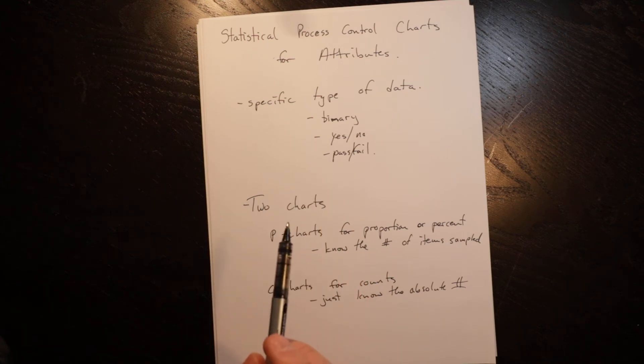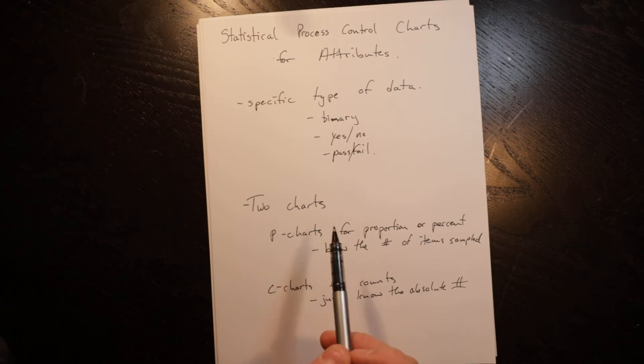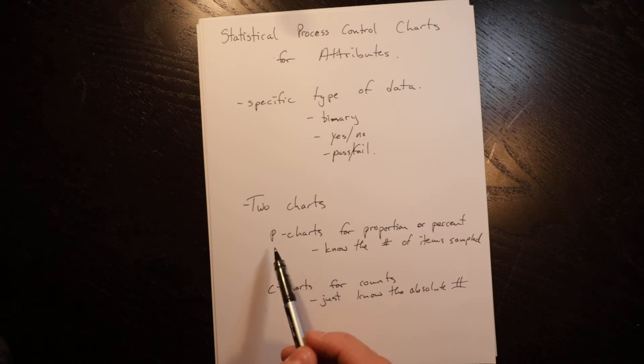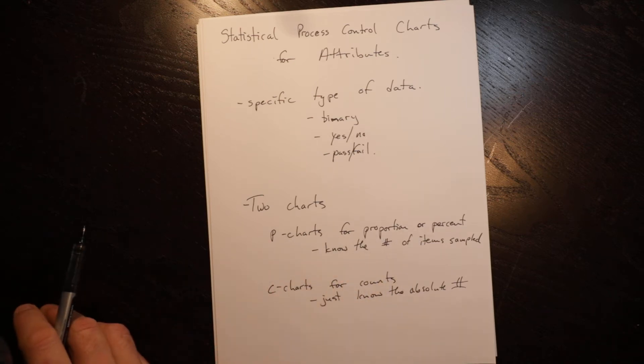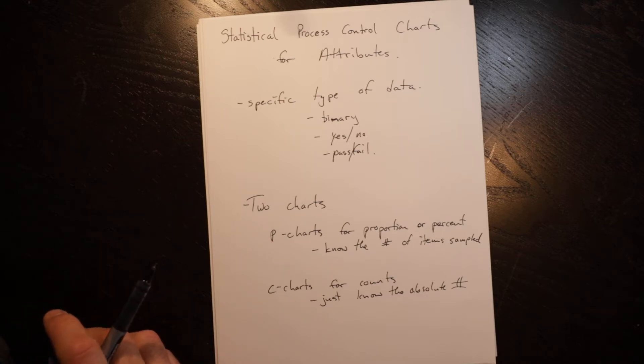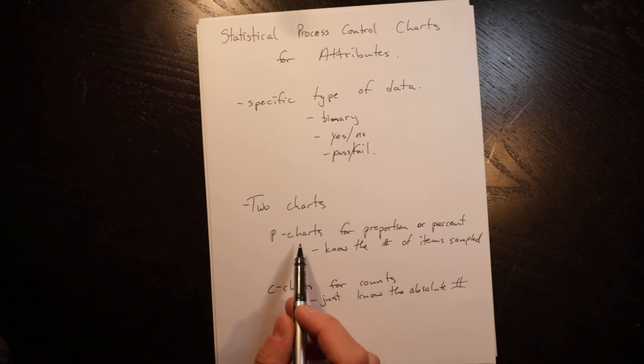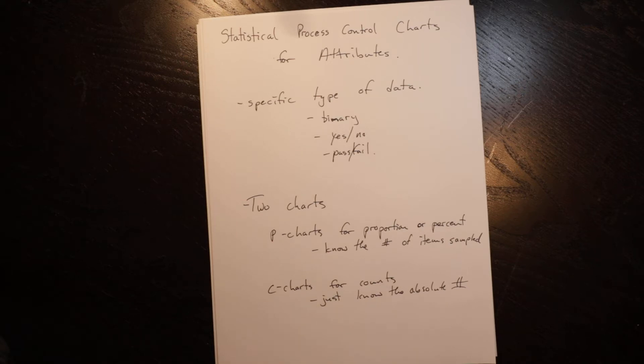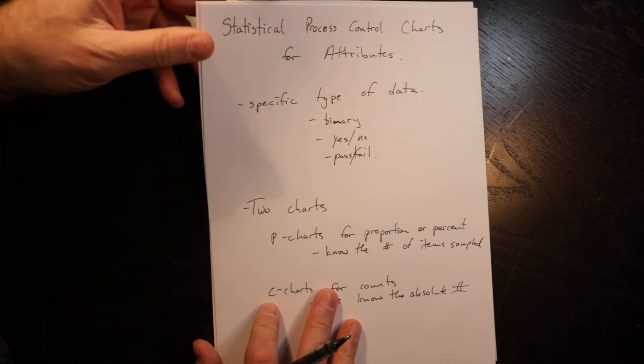But in this particular case we're going to focus on attributes and there are two types of charts. The first is what's called a p chart for proportion or percentage, and in that case you know the number of items that are sampled. In the other circumstance you would do a c chart where you just have counts where you know how many were bad but you don't know out of how big a sample. So let's look at a couple of examples in that context.